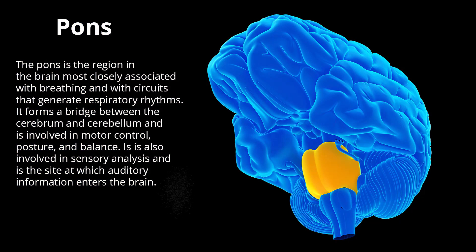The pons is the region in the brain most closely associated with breathing and with circuits that generate respiratory rhythms. It forms a bridge between the cerebrum and cerebellum and is involved in motor control, posture, and balance. It is also involved in sensory analysis and is the site at which auditory information enters the brain.